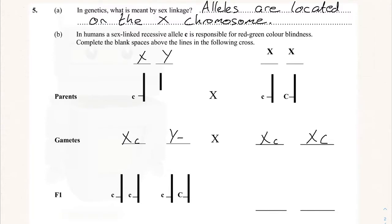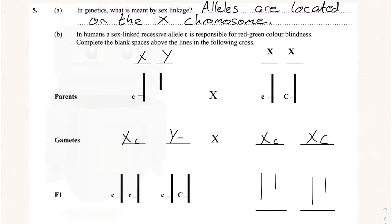The next part is the F1 generation — the possible offspring. If we look at these already, we can see that they're all the same length with alleles on both, so we can assume they're all X's. We then draw a line going down for the Y chromosomes — shorter lines — because one of each pair has to be the Y. We have to see what goes with what: nothing goes on the Y's, and the X's can only come from the mother.